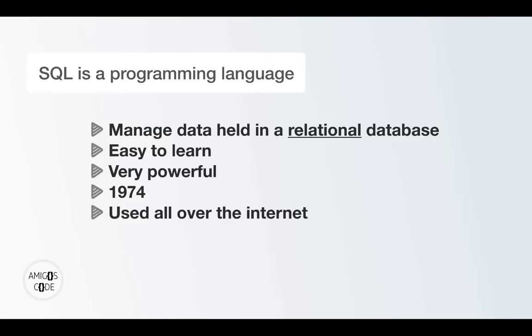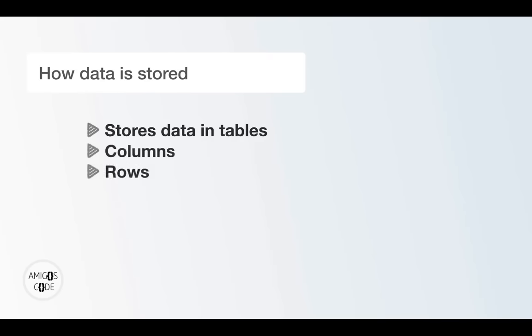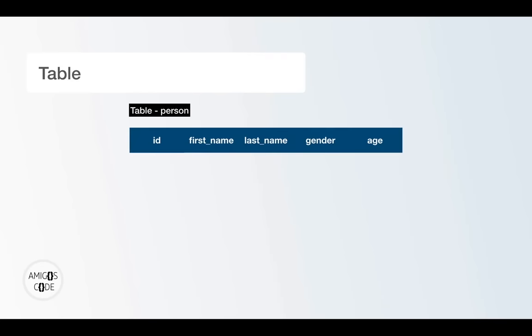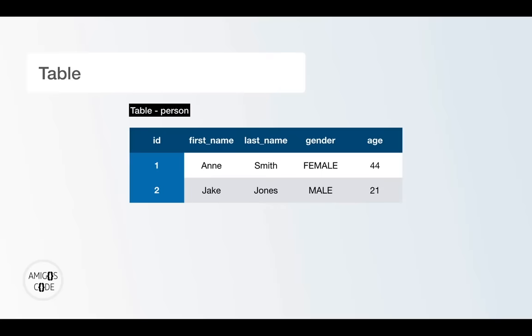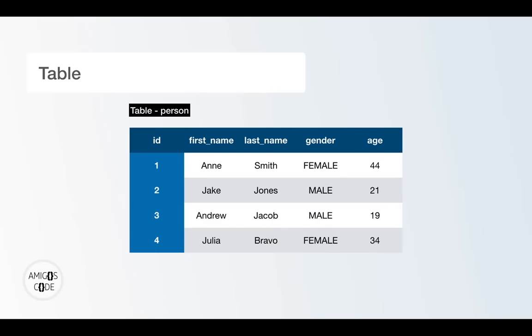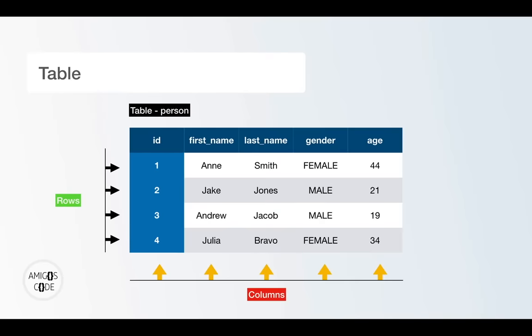The question you might have is how this data is actually stored. Data is stored in tables, and these tables are formed by two things: columns and rows. You might have a table called 'person,' and the columns are the attributes of a person — so ID, first name, last name, gender, and age. The actual rows are the data inside that table. For example, you could have Anne Smith, female, age 44, then another row: Jake Jones, and so on.